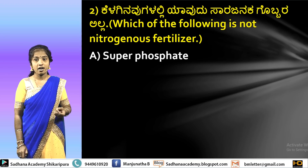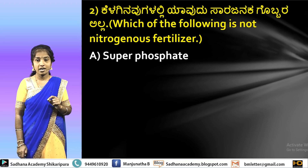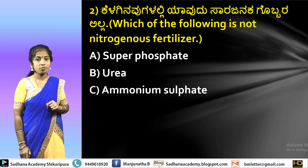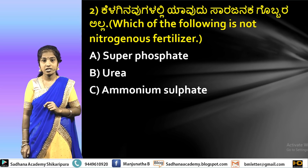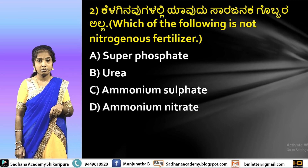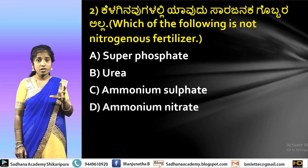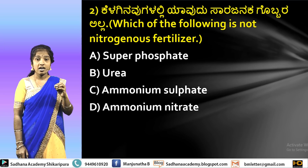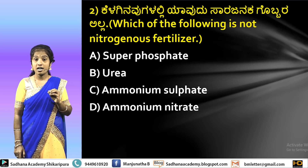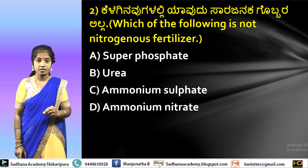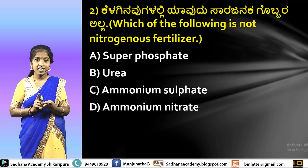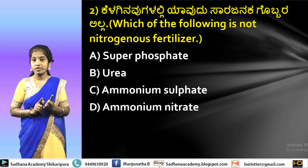The next question: which is a nitrogenous fertilizer? Nitrogenous fertilizers contain N-P-K — that is nitrogen, phosphorus, and potassium. But this question asks about nitrogen. The options are superphosphate, urea, ammonium sulphate, and ammonium nitrate. Urea is a good fertilizer, next are ammonium sulphate and ammonium nitrate.